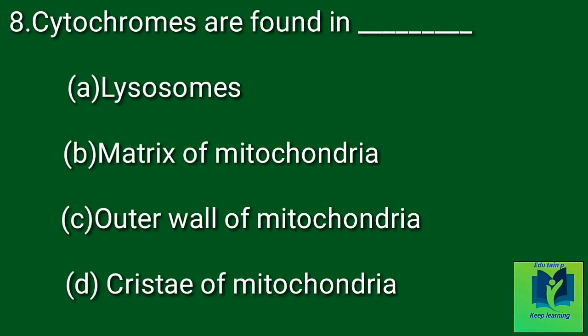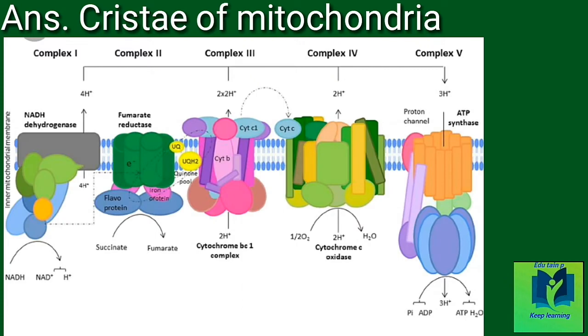Cytochromes are found in: Option A: Lysosomes. Option B: Matrix of mitochondria. Option C: Outer wall of mitochondria. Option D: Cristae of mitochondria. Answer: Cristae of mitochondria.